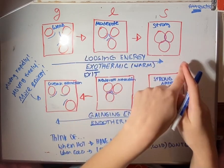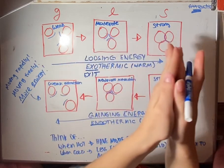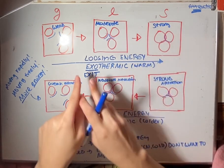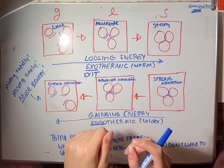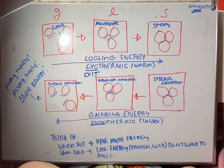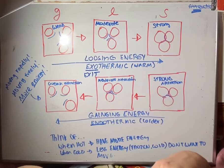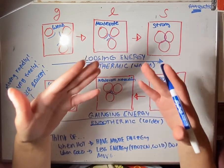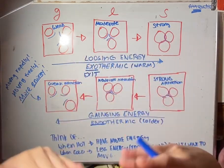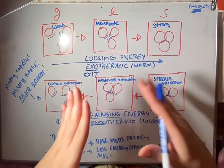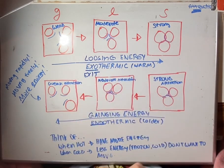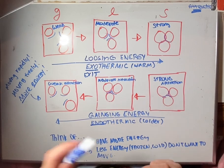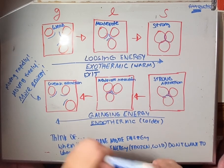The process of going from a gas to a liquid to a solid means you're losing energy. This is an exothermic reaction. When you're losing energy, think of it like a human body — you're releasing heat, you're releasing energy, it's exiting out of your body. So think of "exit" — exo, exit, thermic — exothermic.